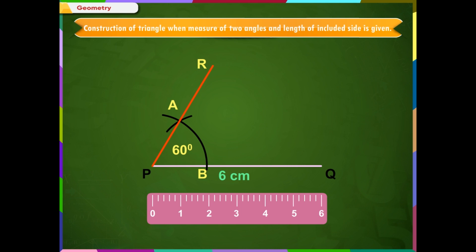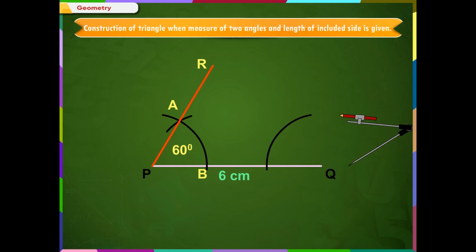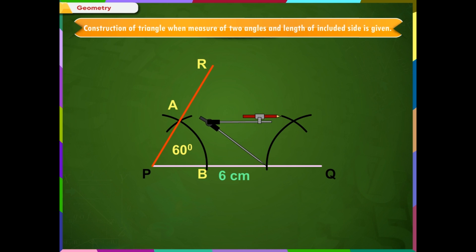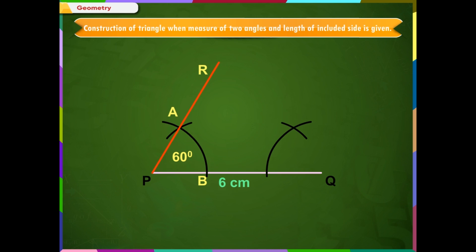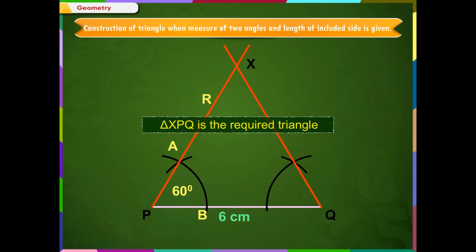Step 4: Repeat the same steps with Q as center. Suppose the intersection point of PR and QR is X. Then, XPQ is the required triangle.